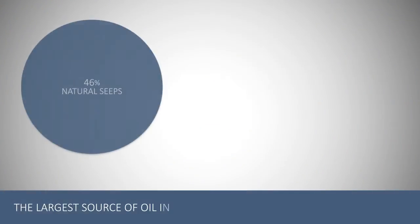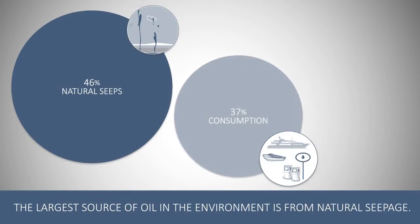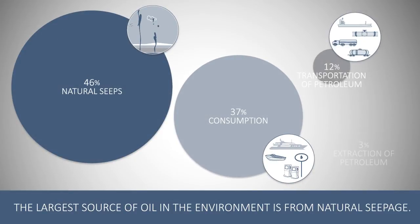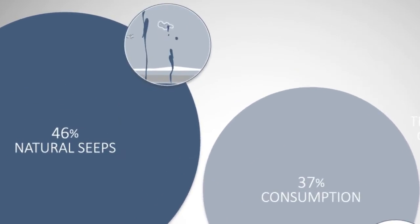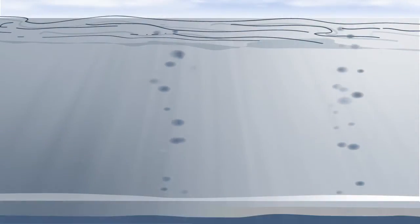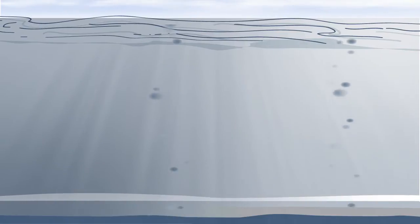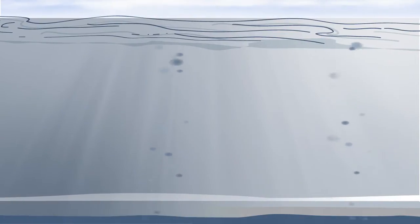The largest source of oil in the environment is from natural seepage. Oil seeps from the sea floor every day. And as such, nature has the ability to clean itself through the process of biodegradation, which continuously removes this oil from the marine environment.